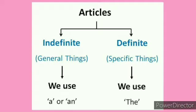What have we learned? Articles. Articles are two types: indefinite or definite articles. General thing, specific thing. We use 'a' or 'an' in indefinite articles and we use 'the' in definite articles.